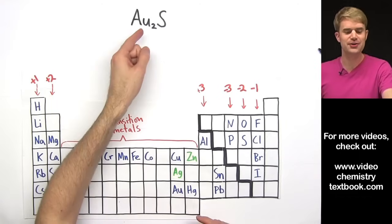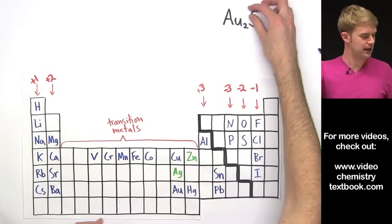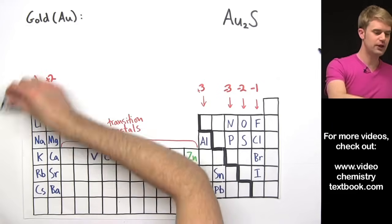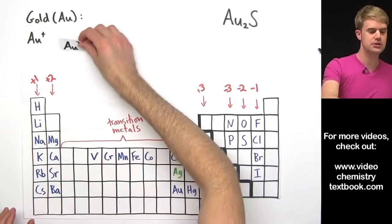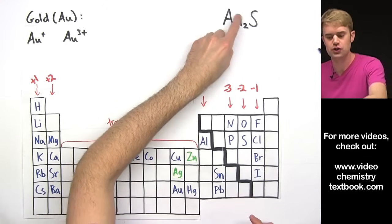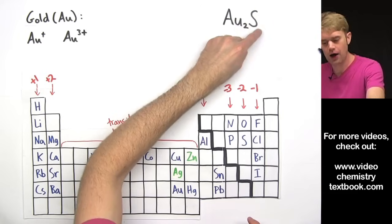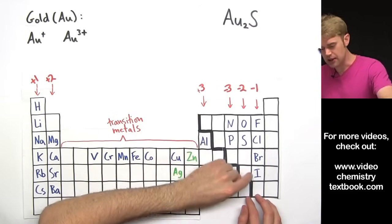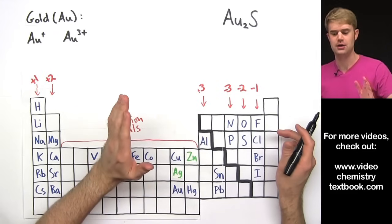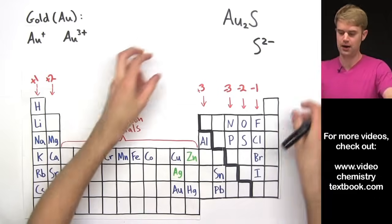Okay, Au2S. So Au here is gold, and gold is able to make two different types of ions. Gold can make Au+ and Au3+, so we've got to figure out what charge this Au has. We'll focus in on S. S is in this column of the periodic table, which means that it always has a charge of 2-.